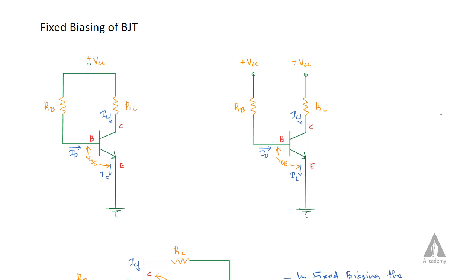If we want the transistor to work as an amplifier, the emitter-base junction should be forward biased and the collector-base junction should be reverse biased. When biasing the transistor to work as an amplifier, we need to pay attention to Q-point stability. The Q-point should remain stable.